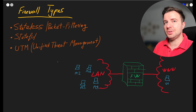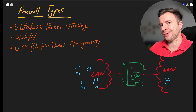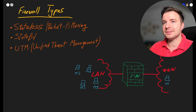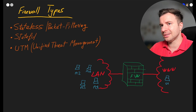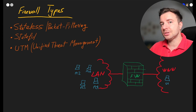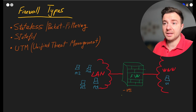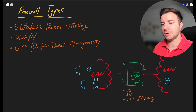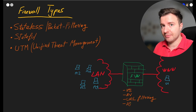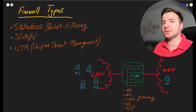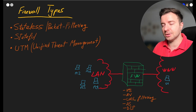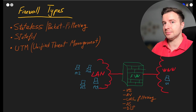Another type is called UTM — Unified Threat Management. I don't completely agree that it's a completely different firewall type, as CompTIA suggests, because it's more of a marketing term than a distinct technology. It's essentially a combination of stateful firewall functions plus additional security features: IPS traffic inspection, intrusion prevention, antivirus and malware scanning, URL filtering based on site reputation, anti-spam functionality, and even DLP — data loss prevention — which inspects traffic up to the application layer to identify file transfers and apply policies.